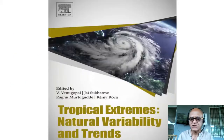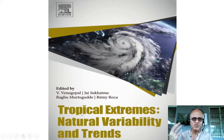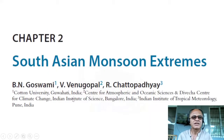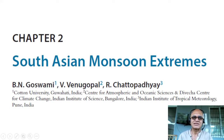Let me start with this book — a few chapters I will use from it and then we'll move to some papers. The book is 'Tropical Extremes: Natural Variability and Its Trends,' edited by a group which includes me as well. The second chapter in this book is by Goswami et al., focusing on South Asian monsoon extremes.